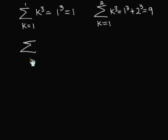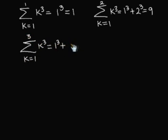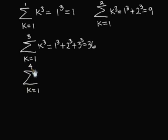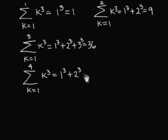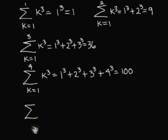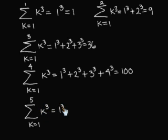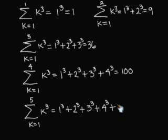The summation from k equal 1 to 3 of k to the cube is equal to 1 to the cube plus 2 to the cube plus 3 to the cube, equal to 36. The summation from k equal 1 to 4 of k to the cube equals 1 to the cube plus 2 to the cube plus 3 to the cube plus 4 to the cube, equal to 100. The summation from k equal 1 to 5 of k to the cube equals 1 to the cube plus 2 to the cube plus 3 to the cube plus 4 to the cube plus 5 to the cube, equal to 225.